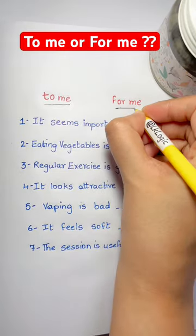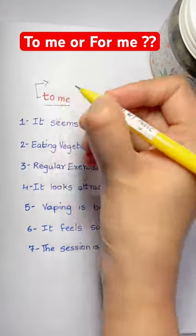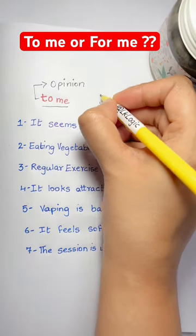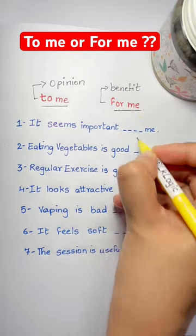To me or for me, what's the difference? Listen guys, 'to me' is more of your personal thoughts on something, like your opinion. 'For me' means it benefits you in some way or it has an impact on you.